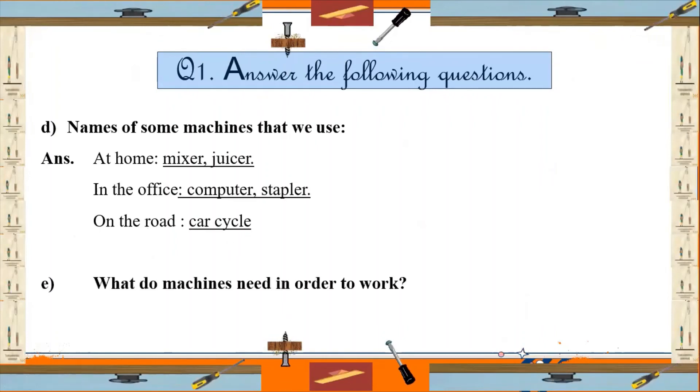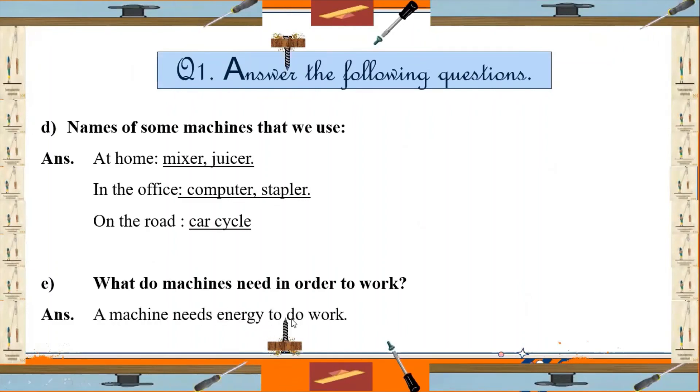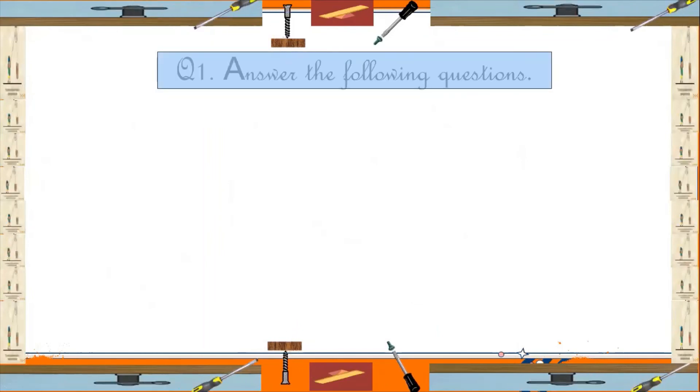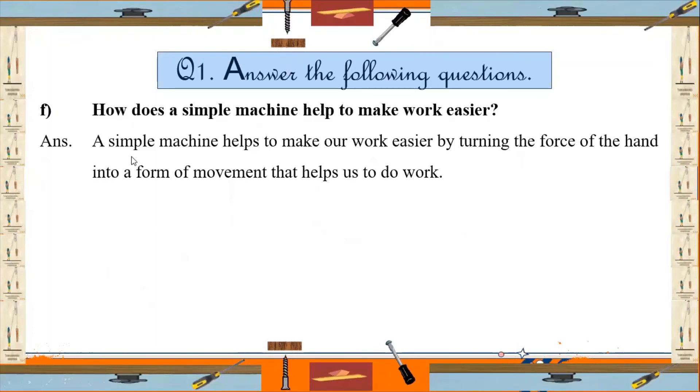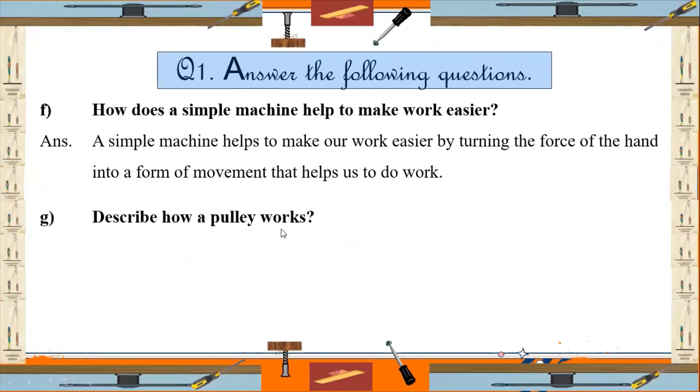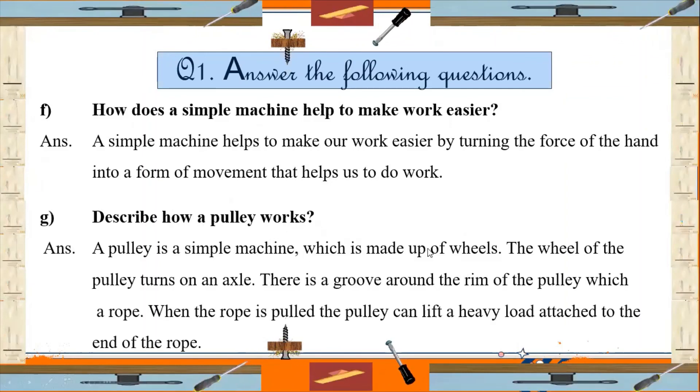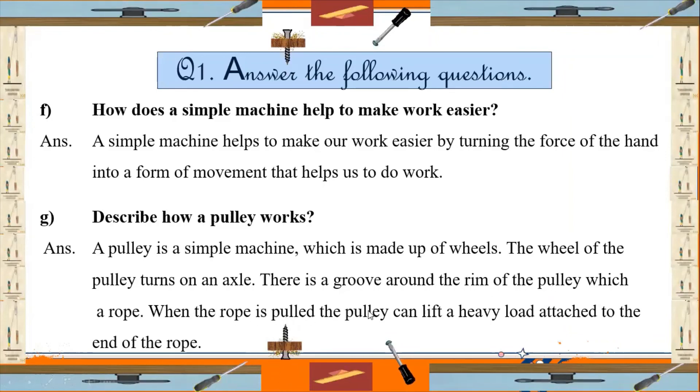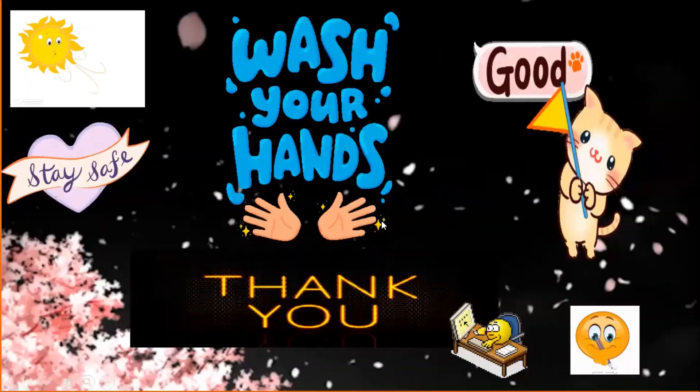Now part E: What do machines need in order to work? Students, a machine needs energy to do work. Energy can be in any form. Now part F: How does a simple machine help to make work easier? Students, a simple machine helps to make our work easier by turning the force of the hand into a form of movement that helps us to do work. Part G: Describe how a pulley works. A pulley is a simple machine which is made up of wheels. The wheel of a pulley turns on an axle. There is a groove around the rim of the pulley which holds a rope. When the rope is pulled, the pulley can lift a heavy load attached to the end of the rope.